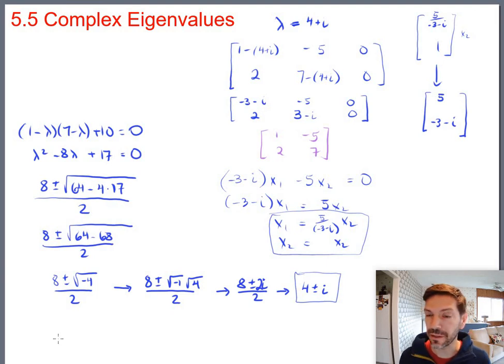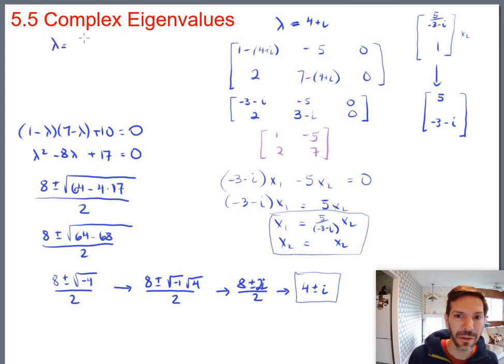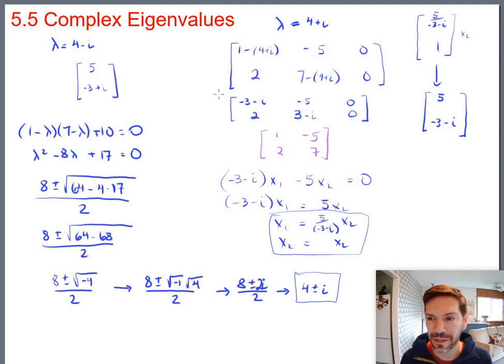A similar process would find the other eigenvector for the other eigenvalue. However, since we know that eigenvalues come in pairs, complex conjugate pairs, it's true that eigenvectors do as well. The eigenvector for 4 minus i is going to turn out to be 5, negative 3, plus i.